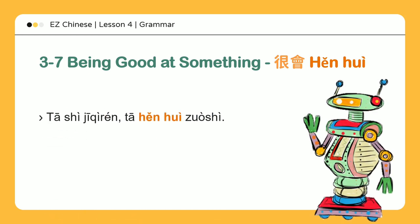机器 — Machine. 人 — Person. 机器人 — Robot. 他是机器人，他很会做事 — He is a robot and can do many things. 做事 — to do things. 会做很多事 — to be able to do many things. 他会做很多事 — He is able to do many things.